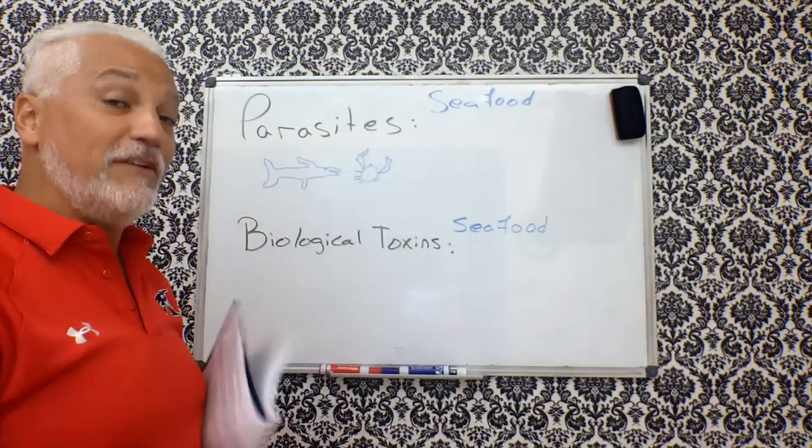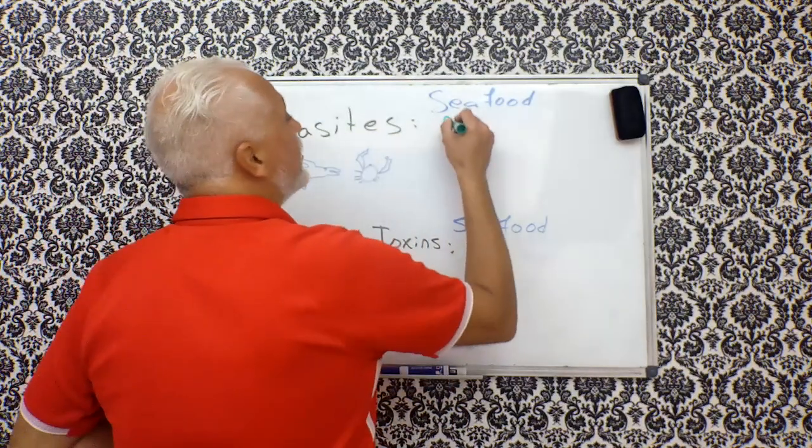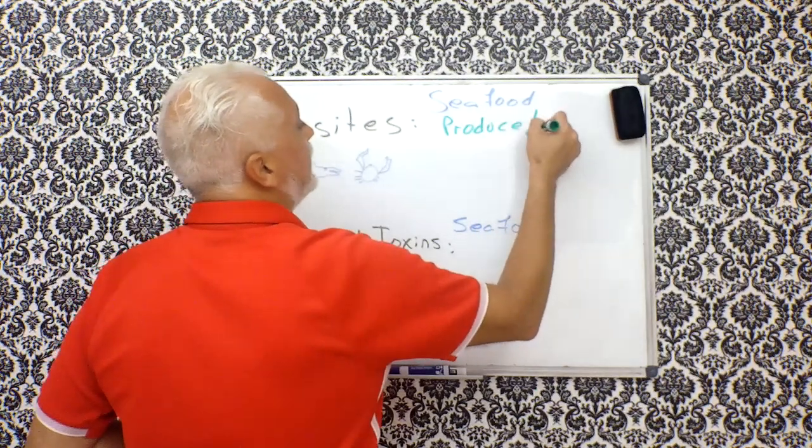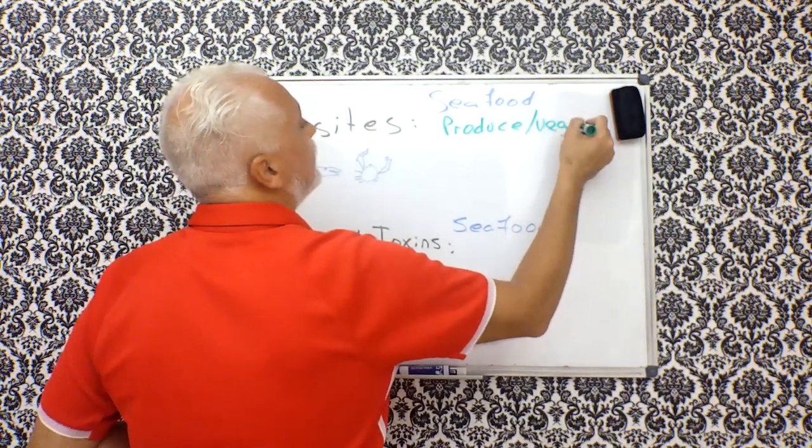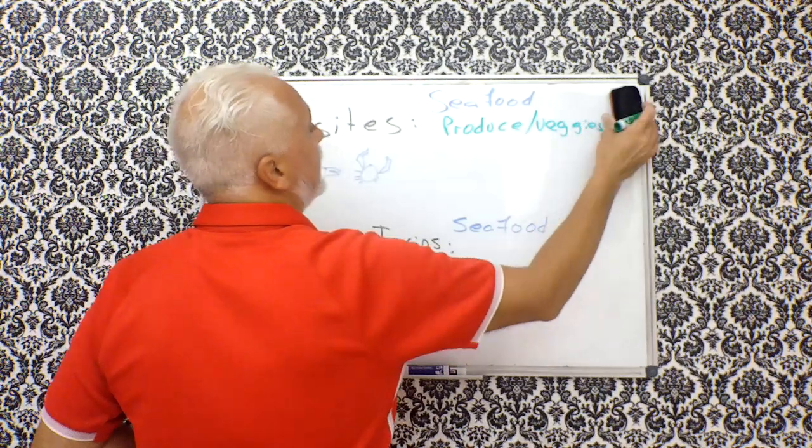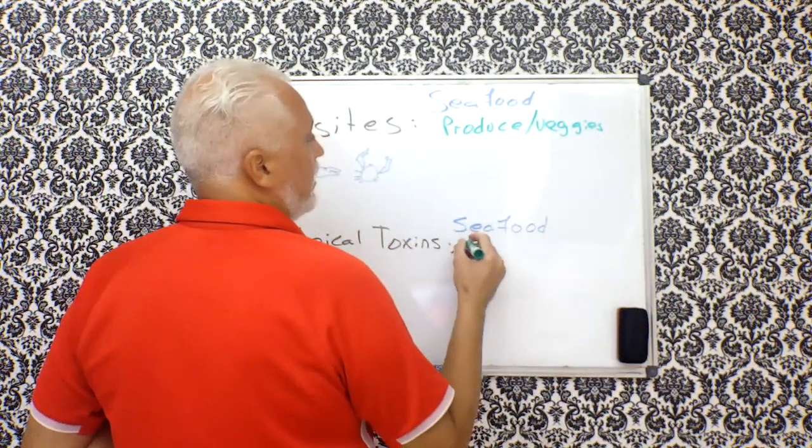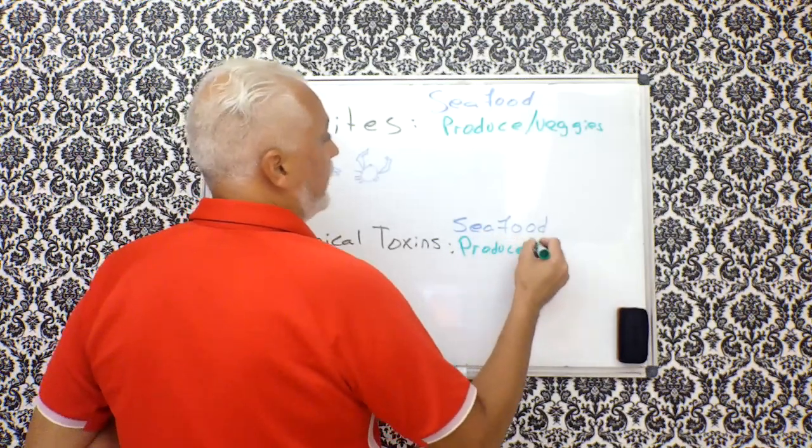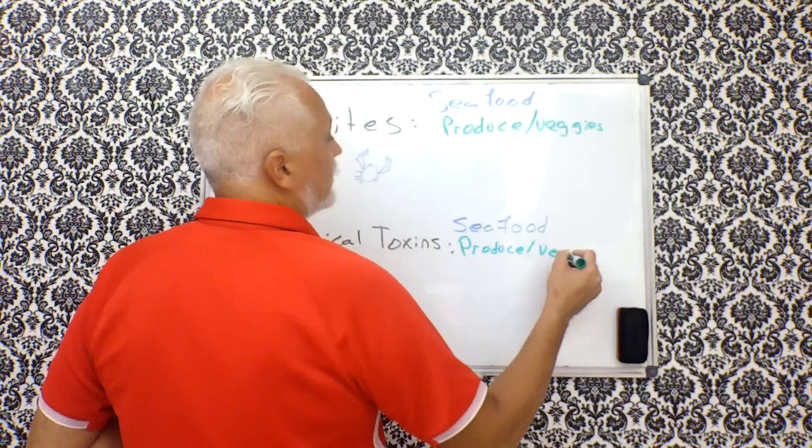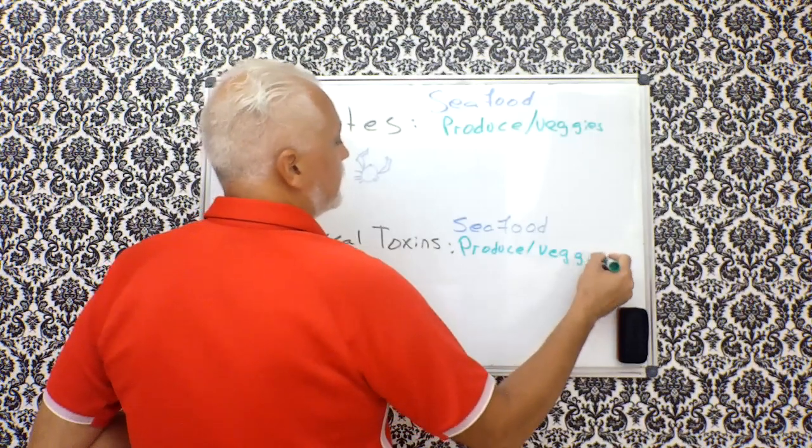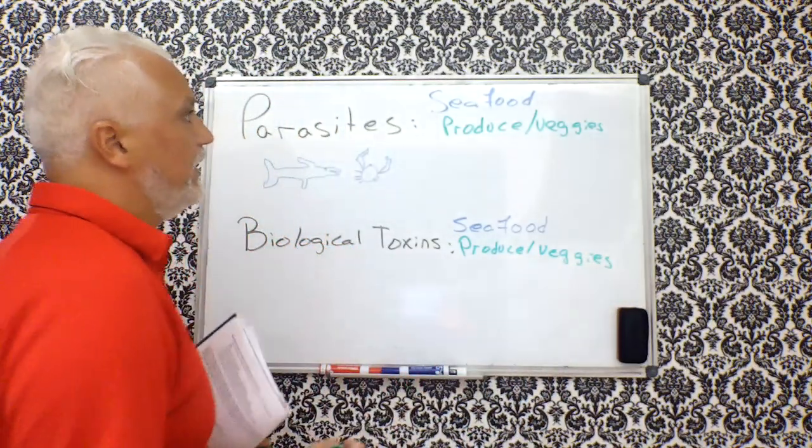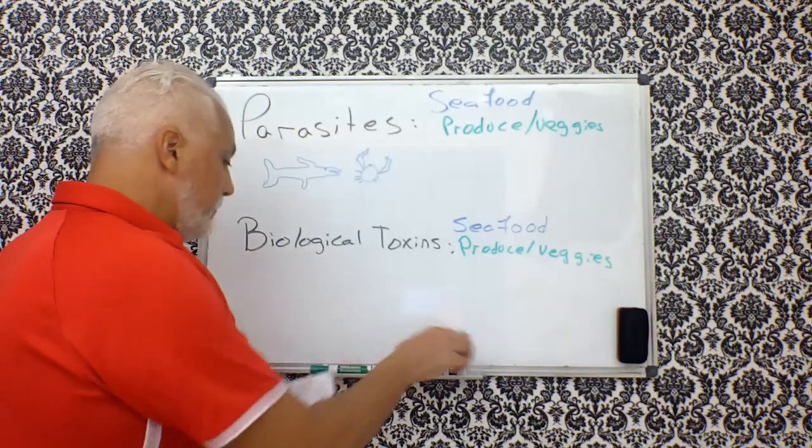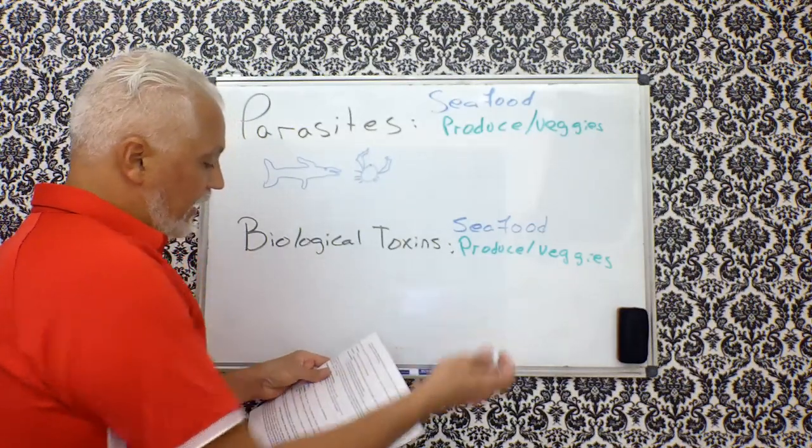The other thing that they have in common is produce, veggies, also known as. Produce is a cool word because produce also sounds like produce. So completely different words. And that's why the English language is so darn complicated.